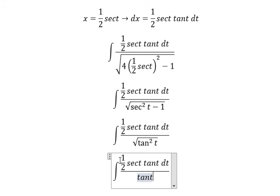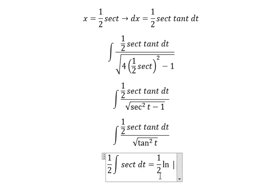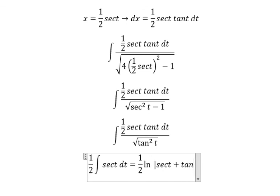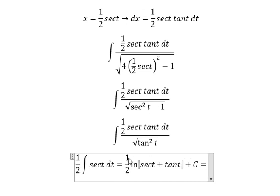We get 1/2 secant t dt, and we get 1/2 ln of the absolute value of secant t plus tangent t plus C.